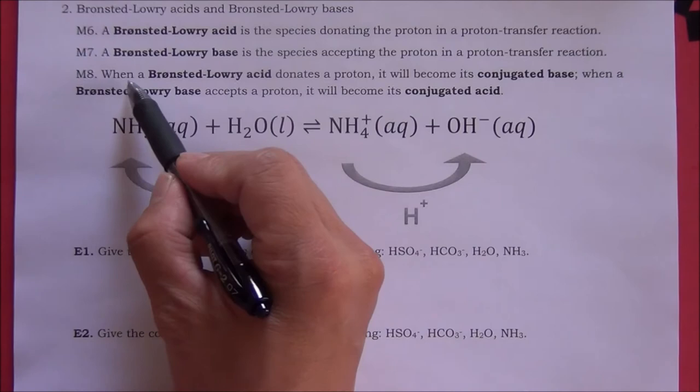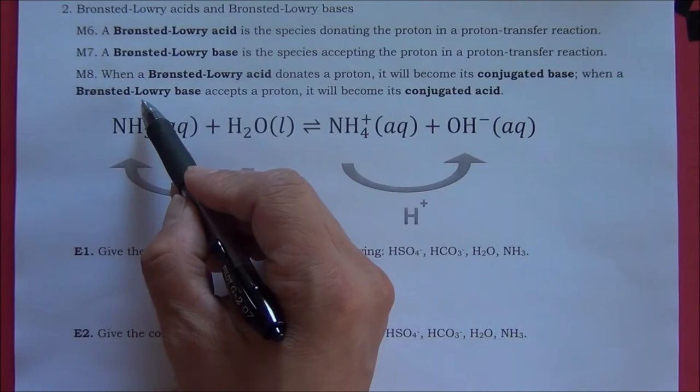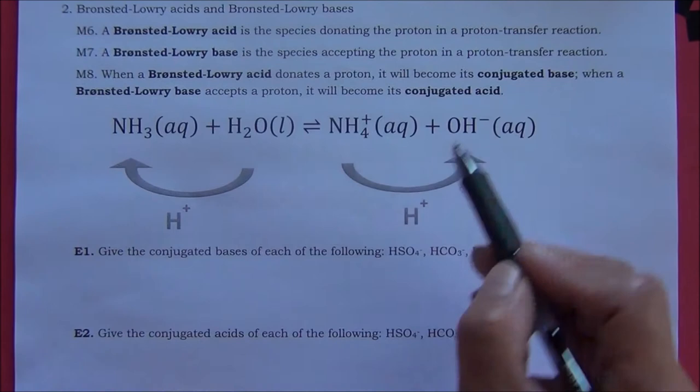When a Brønsted-Lowry acid donates a proton, it will become its conjugate base. At the same time, when a Brønsted-Lowry base accepts a proton, it will become its conjugate acid. Let's look at an example.